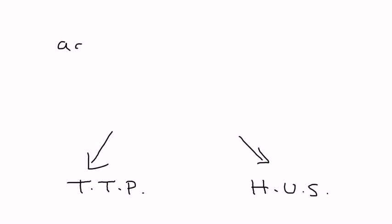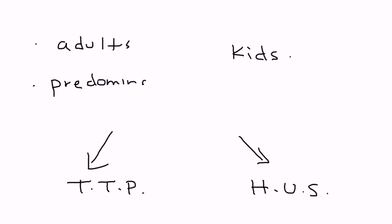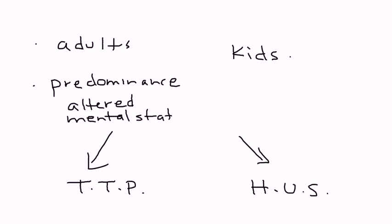There are some ways to differentiate. Adults are usually described as getting TTP, while HUS occurs in children. Another important differentiator is that the predominance of neurologic symptoms, such as altered mental status, is more common in TTP. What's more common in HUS is a predominance of renal failure — more severe renal disease.